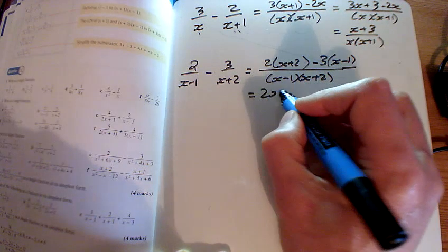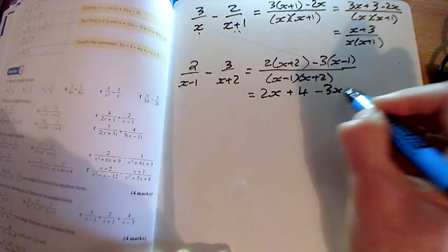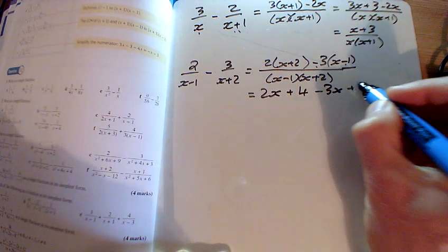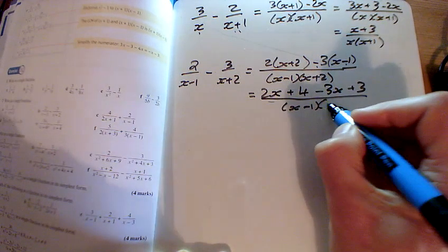Multiplying out the top gives me 2x plus 4 minus 3x. Careful here, minus minus is plus on the bottom there. And the bottom's still the same.